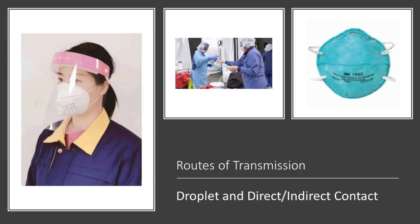COVID-19 is believed to spread person-to-person primarily through large infectious respiratory droplets shed when a person coughs, sneezes, or talks. These particles can land in the eyes, nose, or mouth of nearby persons, or be inhaled by those within close proximity — this is called droplet transmission. These droplet particles are heavy and don't stay suspended in the air for very long, typically falling to the ground between 3 to 6 feet once expelled. Wearing a face mask and eye protection, plus a gown and gloves, can help protect you from large respiratory droplets by creating a physical barrier over your mucous membranes.